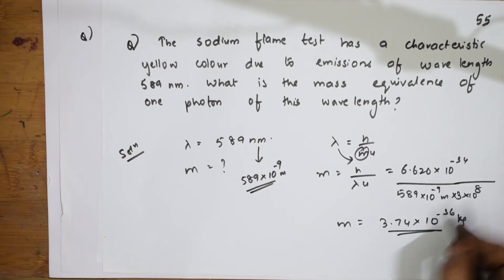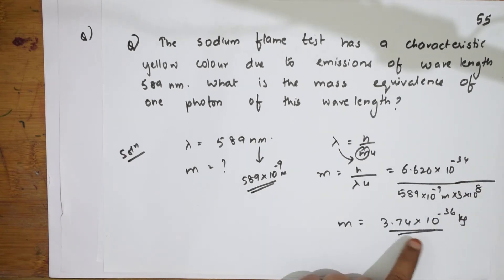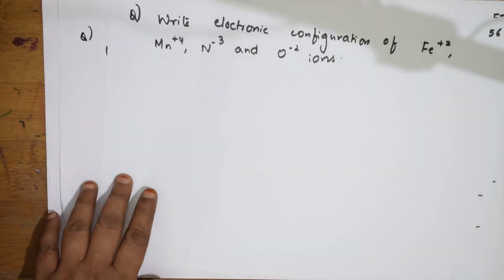When I solve this, I get an answer of 3.6 × 10⁻³⁶ kg·m²/s. That is the mass equivalence. Next question.